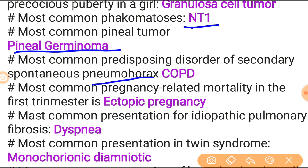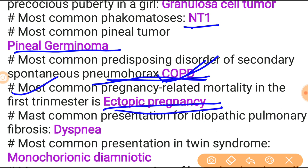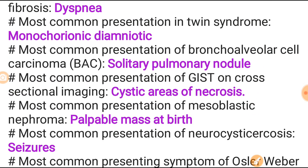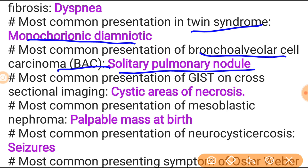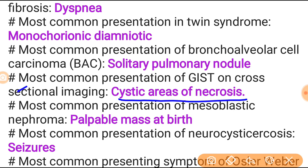Most common predisposing disorder for secondary spontaneous pneumothorax is COPD - most important topic. Most common pregnancy-related mortality in the first trimester is ectopic pregnancy. Most common presentation of idiopathic pulmonary fibrosis is dyspnea. Most common presentation of twin-twin transfusion syndrome is monochorionically diamniotic twins. Most common representation of bronchoalveolar cell carcinoma is solitary pulmonary nodule. Most common presentation of GIST on cross-sectional imaging is cystic area of necrosis - also enlisted in important topics.